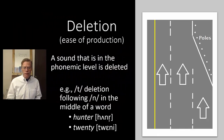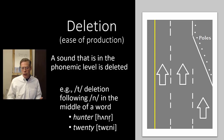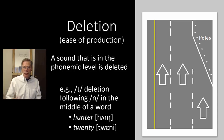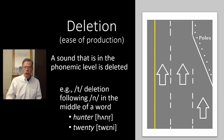Deletion, of course, is the inverse of that, and this is usually an ease of production process — sometimes we delete sounds to make a word a little easier to pronounce. A sound that is in the phonemic level isn't represented phonetically; we simply don't pronounce it. For example, in the words 'hunter' and 'twenty', in careful speech I would pronounce the T, but in fast speech I would just say 'hunter' and 'twenty'. In that case, the T gets deleted right after an N.